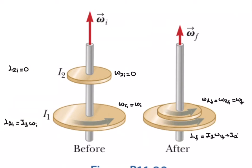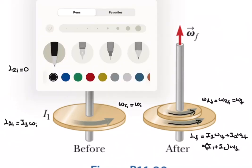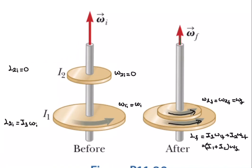The final angular momentum is L final = I1 times omega 1 final plus I2 times omega 2 final, which simplifies to (I1 + I2) times omega final. These add up algebraically because the sense of rotation for both disks is the same, so the angular momentum vectors are both in the z direction.